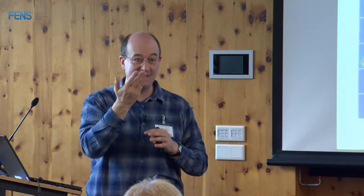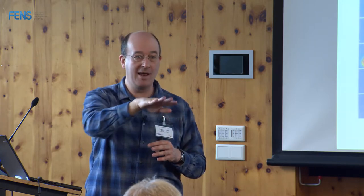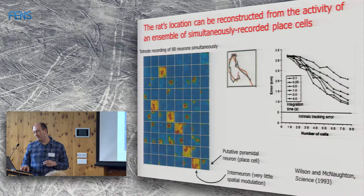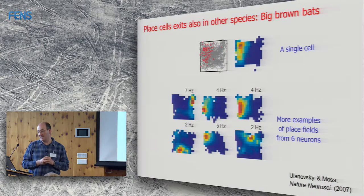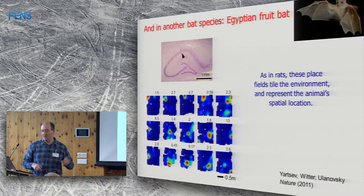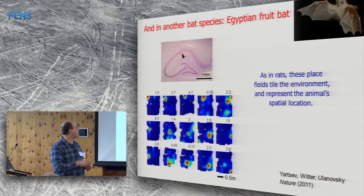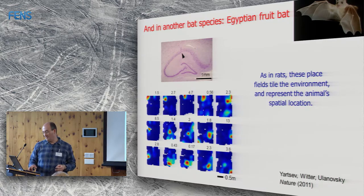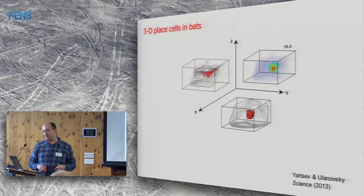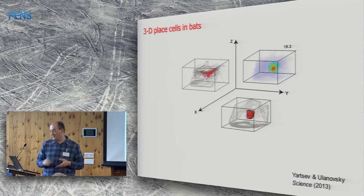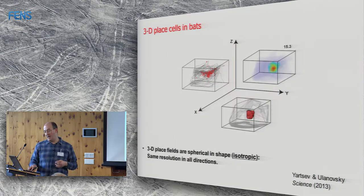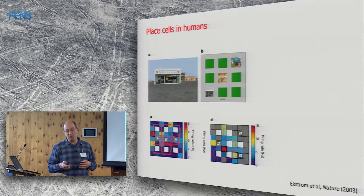Place cells are not just a rodent phenomenon. In my postdoc I found place cells in big brown bats, and we also found them in our current study species, the Egyptian fruit bat, with place fields that tile space. We also found place fields in 3D — letting a bat fly in a five-by-six-meter room revealed neurons representing 3D space. So place cells are not unique to rodents.